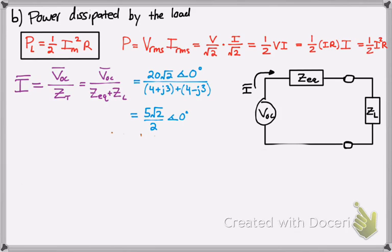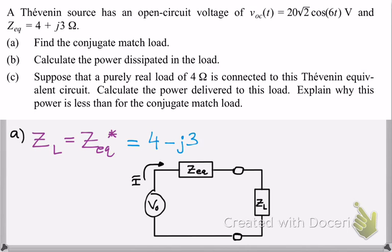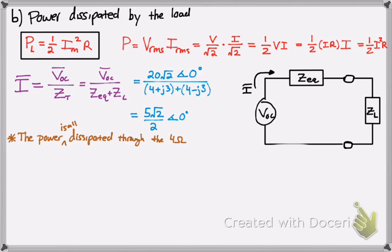And then we know that the power is dissipated through the 4 Ohm resistor specifically by this load. So that means, because we know it's a 4 Ohm resistor, because if you notice the impedance is 4 plus J Omega, and the 4 is the Ohm, the resistor, and the J3 could be a capacitor or an inductor.